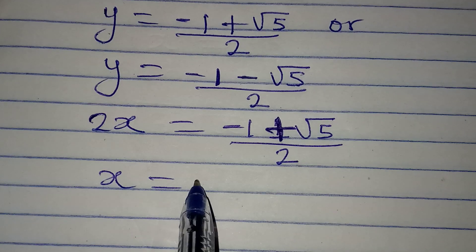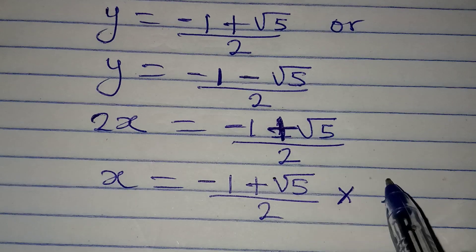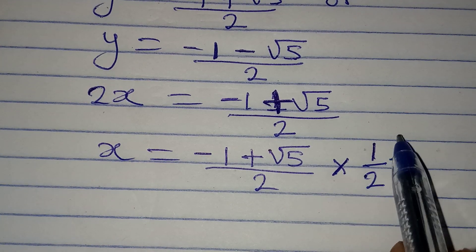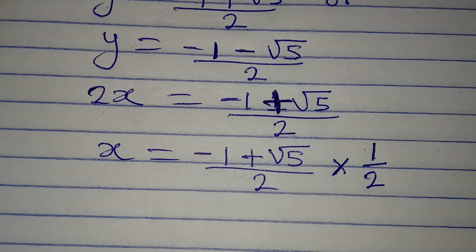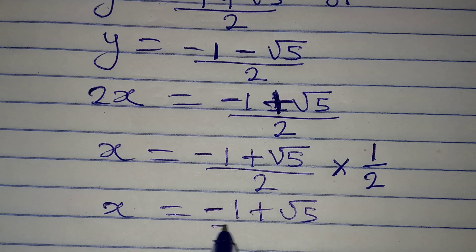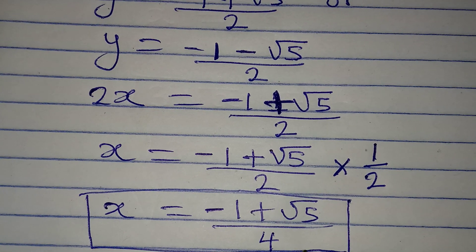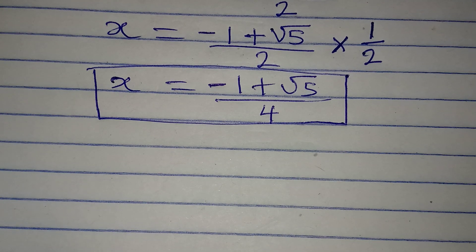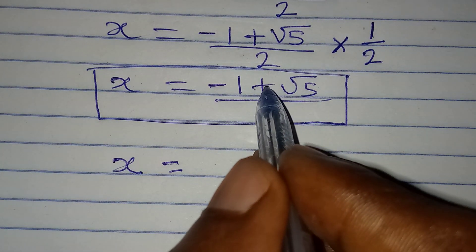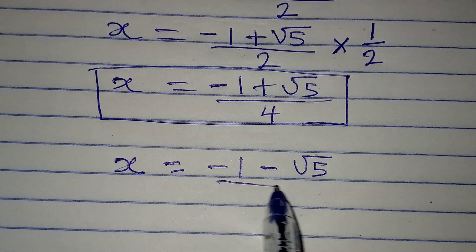So x will be equal to minus 1 plus root 5 all over 2, multiplied by 1 over 2, because anything multiplied by half is the same as dividing by 2. So x equals minus 1 plus root 5 over 4. This is another value of x. The third value of x will be x equals minus 1 minus root 5, over 4.